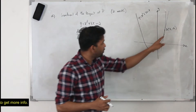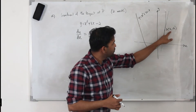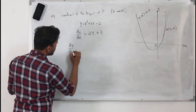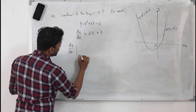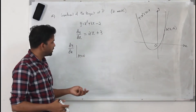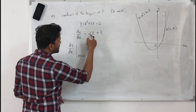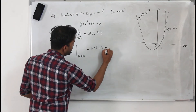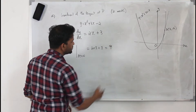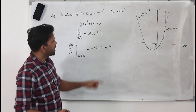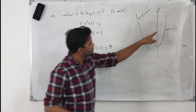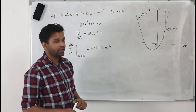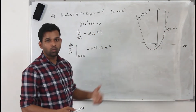To find the gradient at the specific point P(3, 16), take the x-coordinate 3 and substitute it into the gradient function. So dy/dx at x = 3 gives 2(3) + 3, which is 6 + 3 = 9. The gradient of the tangent line at point P is 9. This part carries two marks.